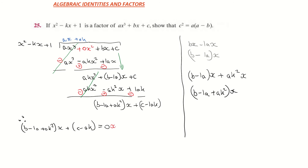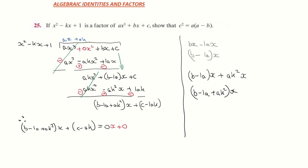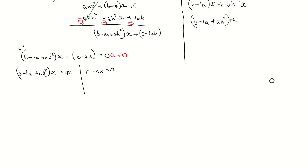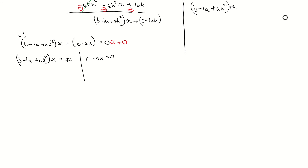I'm going to write that as 0x plus 0 — putting in the placeholder, because we have something times x equal to 0x, and the constant equals the constant. So pairing them up: b minus a plus ak squared times x equals 0x, and the constant c minus ak equals 0. Since both sides have an x, I can divide both sides by x, leaving b minus a plus ak squared equals 0.